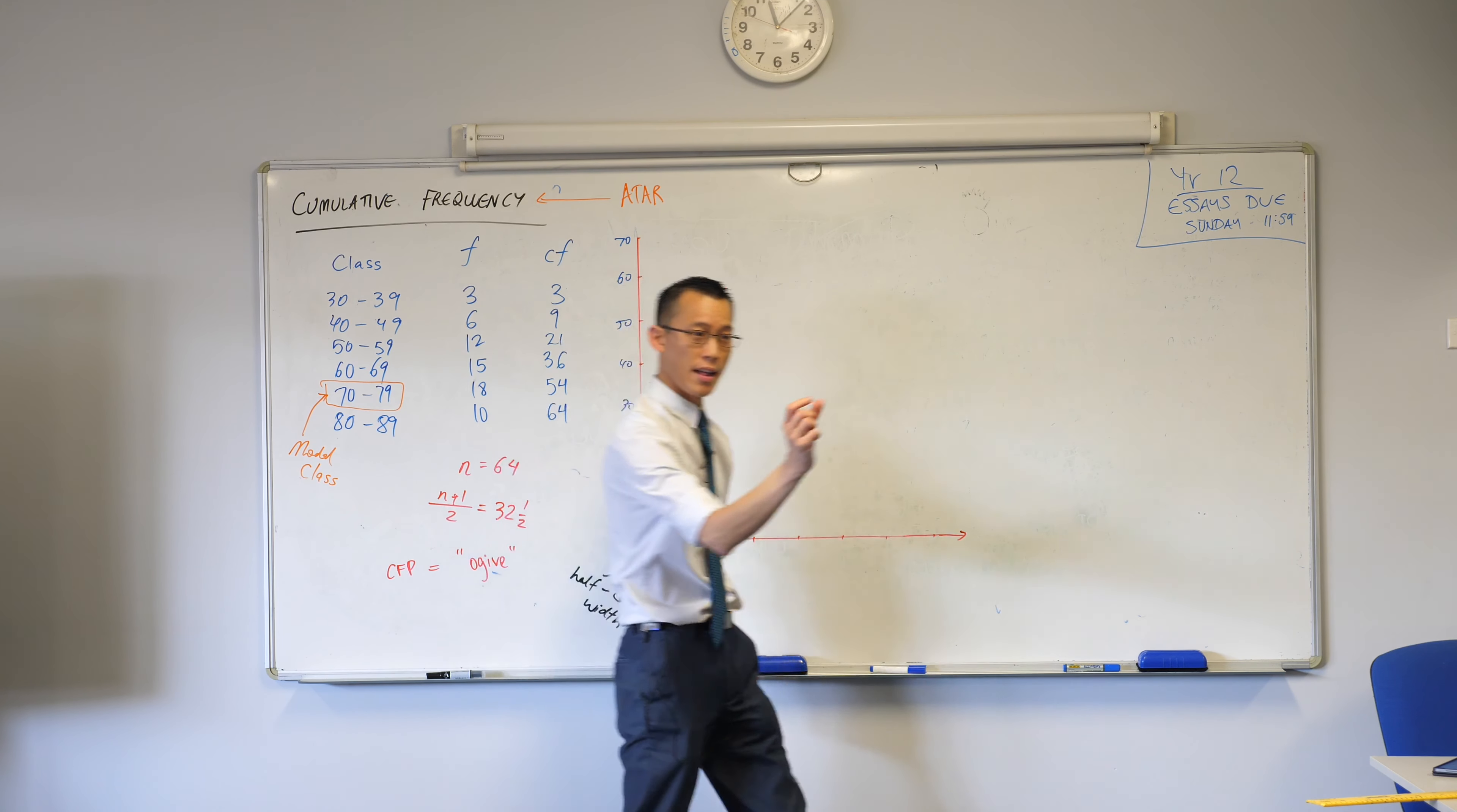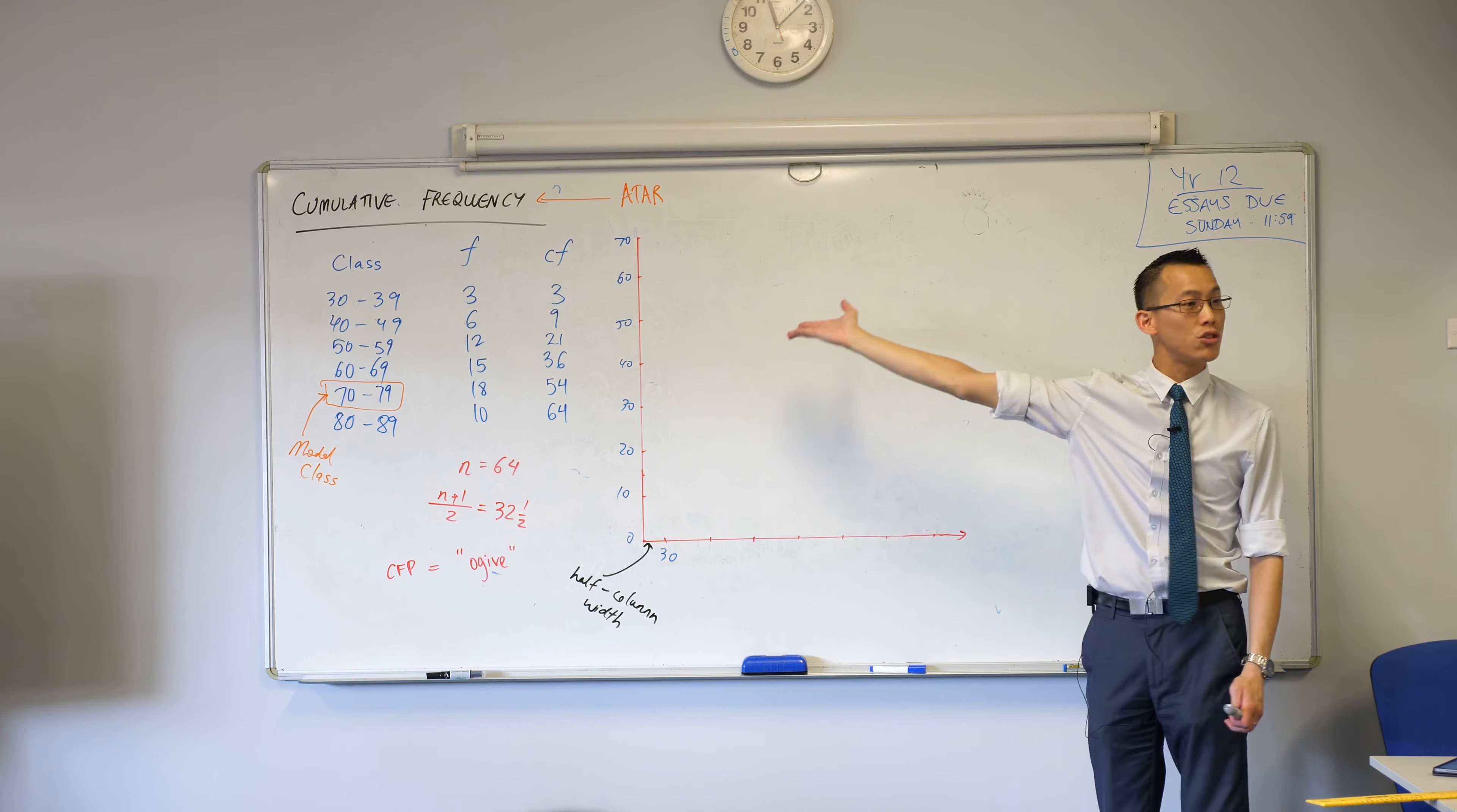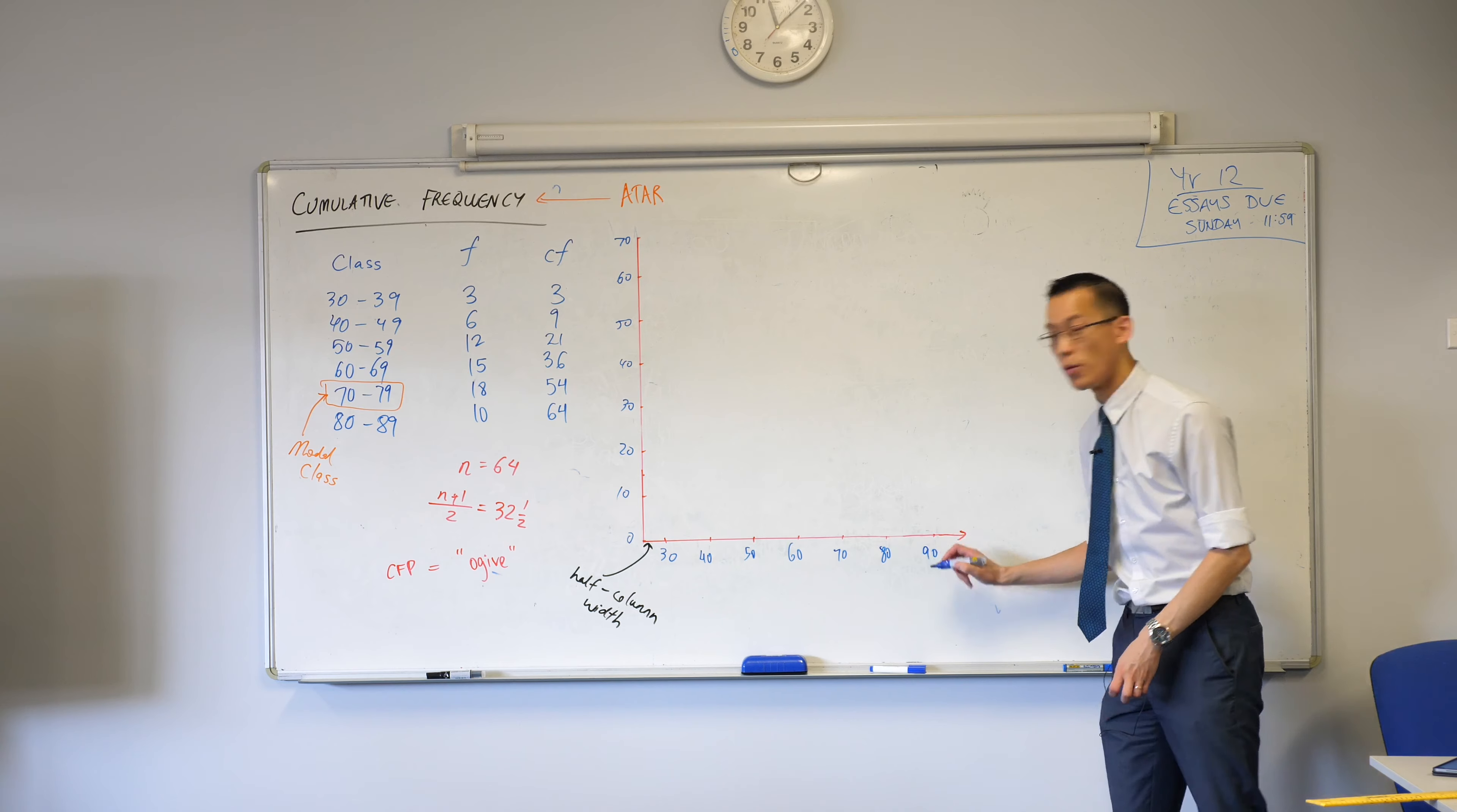For now, I just want you to register there's a half column width there. On my board, it's five centimeters. And then everything else, I've got full columns going up according to my classes, which in this case is tens. But there's nothing stopping your classes being other sizes, depending on what data you are dealing with.